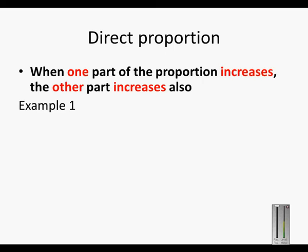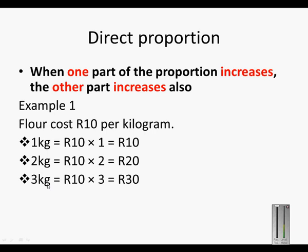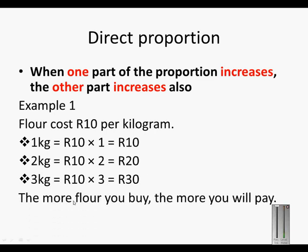This is an example. Flour costs 10 Rand per kilogram. It means that 1 kilogram costs 10 times 1 is 10 Rand. 2 kilograms cost 10 times 2, 20 Rand. 3 kilograms cost 10 times 3, which is 30 Rand. So the more flour you buy, the more you will pay.